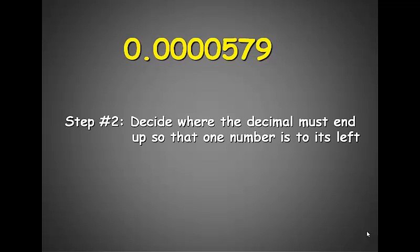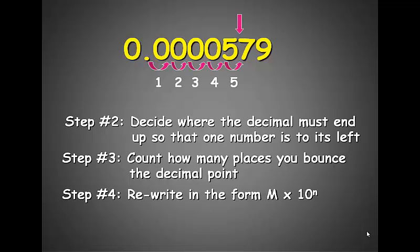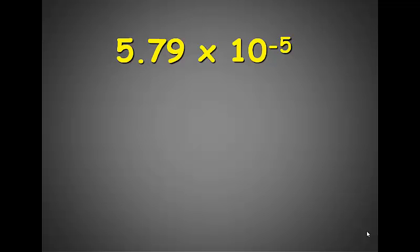Now let's do this number. Again, decide where the decimal point must end up so that there's only one number to its left, and that number has to be a non-zero number. Right after the 5. Count how many places you bounced over to get there: 1, 2, 3, 4, 5. Rewrite our number in its proper format. In this case, because we moved our decimal point to the right, the n in our m times 10 to the n will be negative, or 5.79 times 10 to the negative 5th.